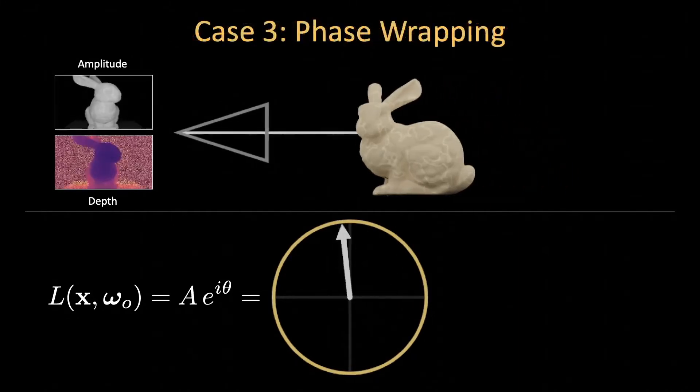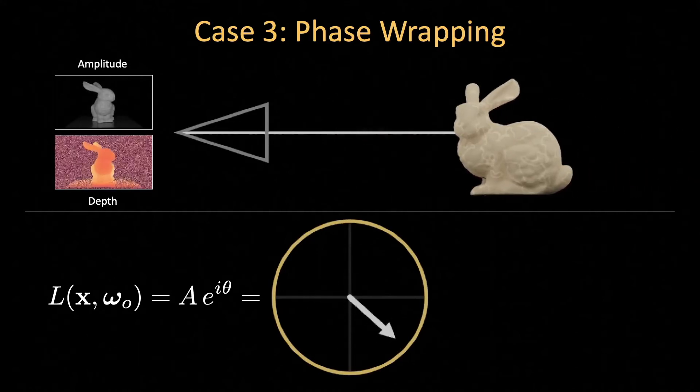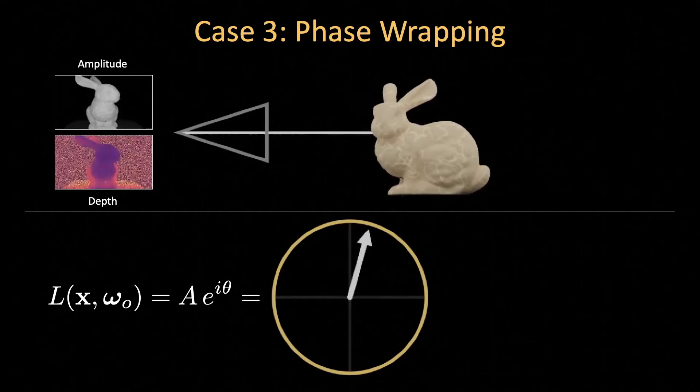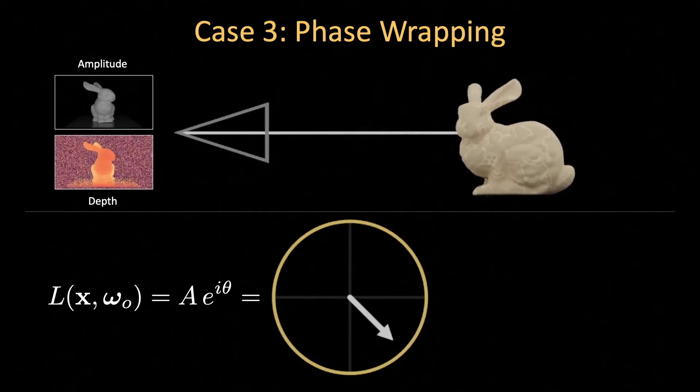Finally, for large scenes, the phase will wrap around 2pi, and return to zero. As a result, two objects at different distances can produce the same phase, resulting in an ambiguous relationship between phase and depth.